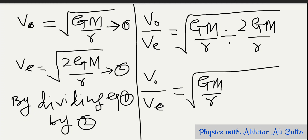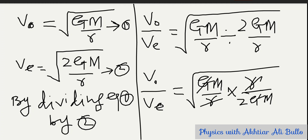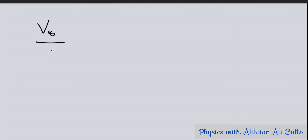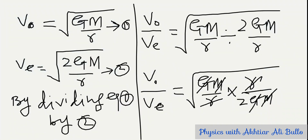The ratio of orbital velocity to escape velocity is √(GM/r) × (r/2GM). When we change division into multiplication, r cancels with r, G cancels with G, and M cancels with M, giving us √(1/2).